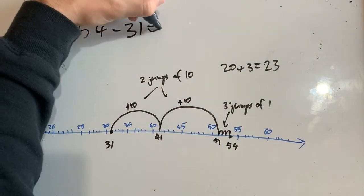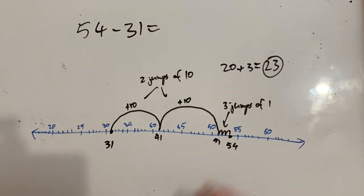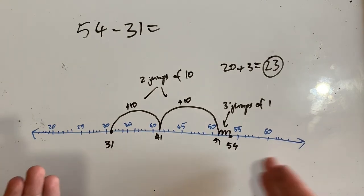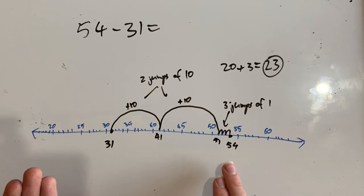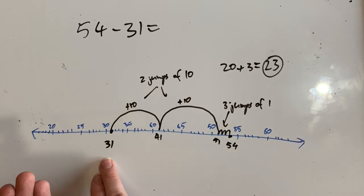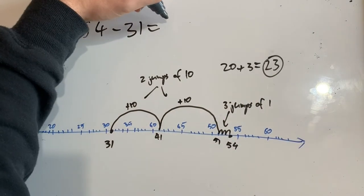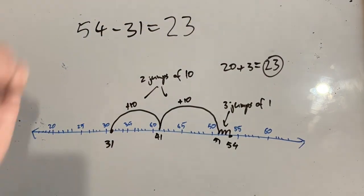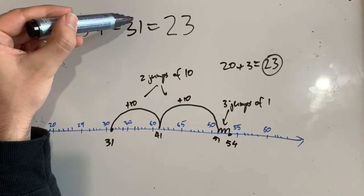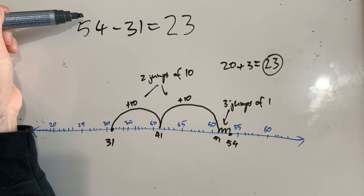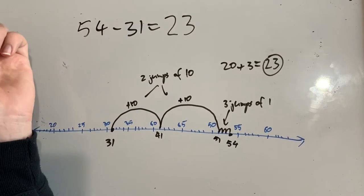So the solution to my problem is 23. The difference between 31 and 54 — how far I had to travel to get between the two — if I was to take 31 away from 54, I would get 23. That means 23 added to 31 is 54, and 54 take away 31 is 23.